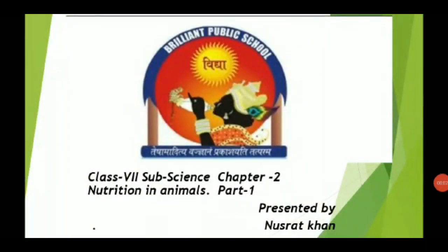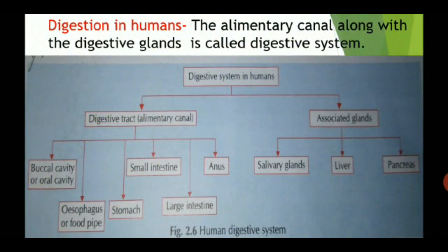Hello children, welcome to online class. Today we will start a new chapter — Chapter Number Two: Nutrition in Animals. We will learn about the human digestive system. It consists of the following organs and glands: buccal cavity, esophagus, stomach, small intestine, and large intestine.